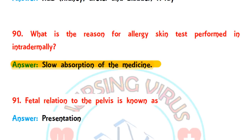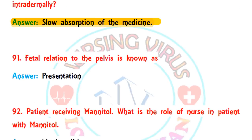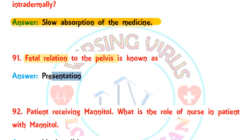Question 91: the fetal relation to the pelvis is known as — that is called presentation. The position or relation of the fetus towards the pelvic area is called presentation.